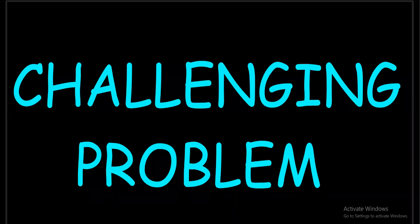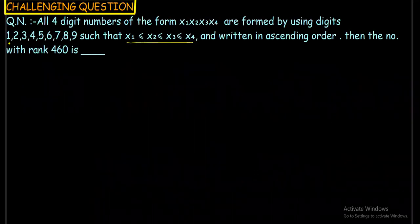Hello everyone and welcome to Mathematics Colio. Here I am with yet another interesting and challenging problem which I'll solve using two methods, and by the end of the video you will learn a beautiful application of Beggar's Method. The question is: all four-digit numbers of the form x1 x2 x3 x4 are formed using digits 1–9 such that x1 ≤ x2 ≤ x3 ≤ x4, written in ascending order like a dictionary problem. Find the number with rank 460.